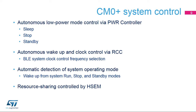The Bluetooth Low-Energy peripheral autonomously controls the system's low-power sleep, stop, and standby modes based on the Bluetooth Low-Energy operating modes. When waking up from low-power modes, the Bluetooth Low-Energy peripheral detects the system's operating mode and autonomously configures its system clock to ensure the application Cortex-M4 state remains unchanged.